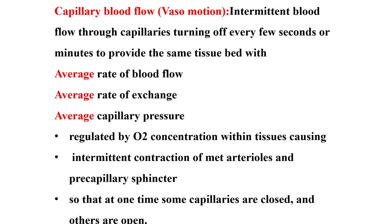The range of supply of blood flow and nutrition to different parts of the body can be increased. Through this range you can use a little, average, or large blood flow because of the presence of vasomotion. Vasomotion is intermittent blood flow through capillaries turning off every few seconds or minutes, providing the same tissue bed with an average rate of blood flow, average rate of exchange of nutrients and excreta, at an average capillary pressure.